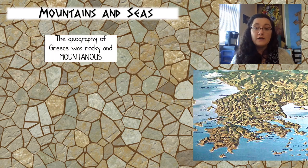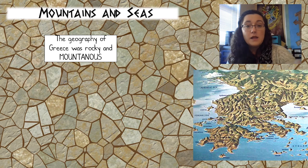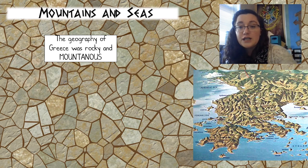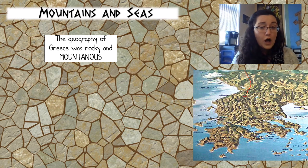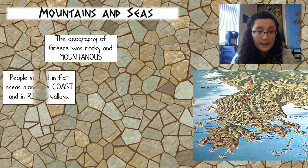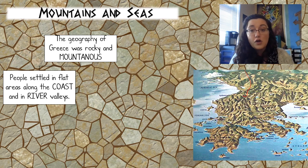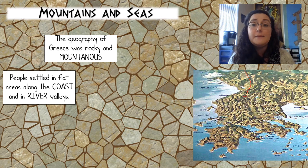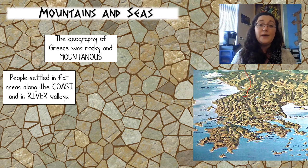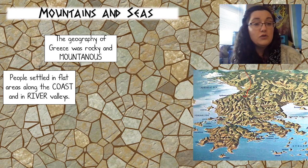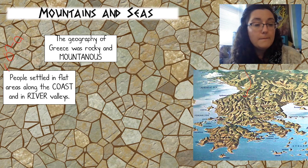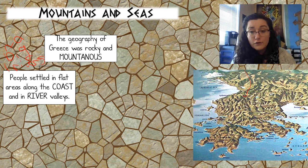The geography of Greece was rocky and mountainous. You can see the mountains are just about everywhere in Greece, so there's not a lot of flat land for farming. People settled in the flat areas along the coast and river valleys. There are no major rivers like we have in other civilizations — write down 'no big rivers' — just some small ones from streams coming down from the mountains.